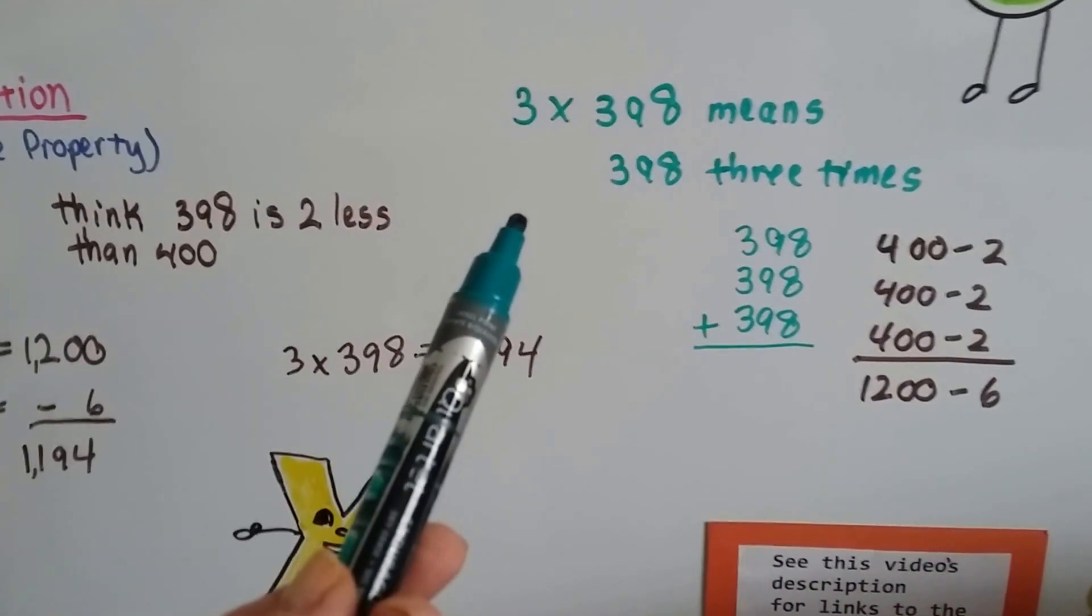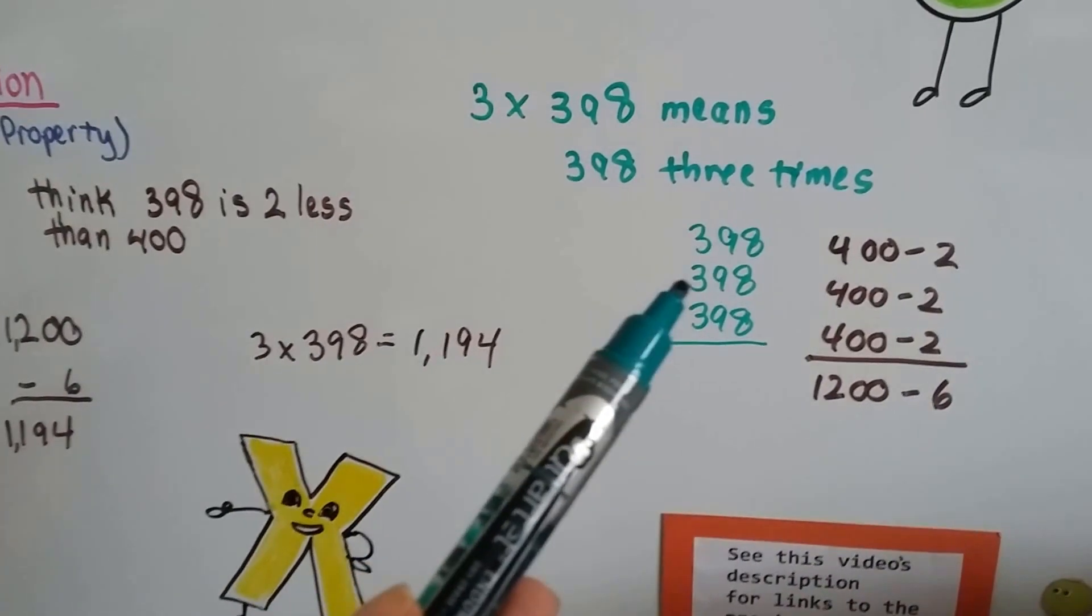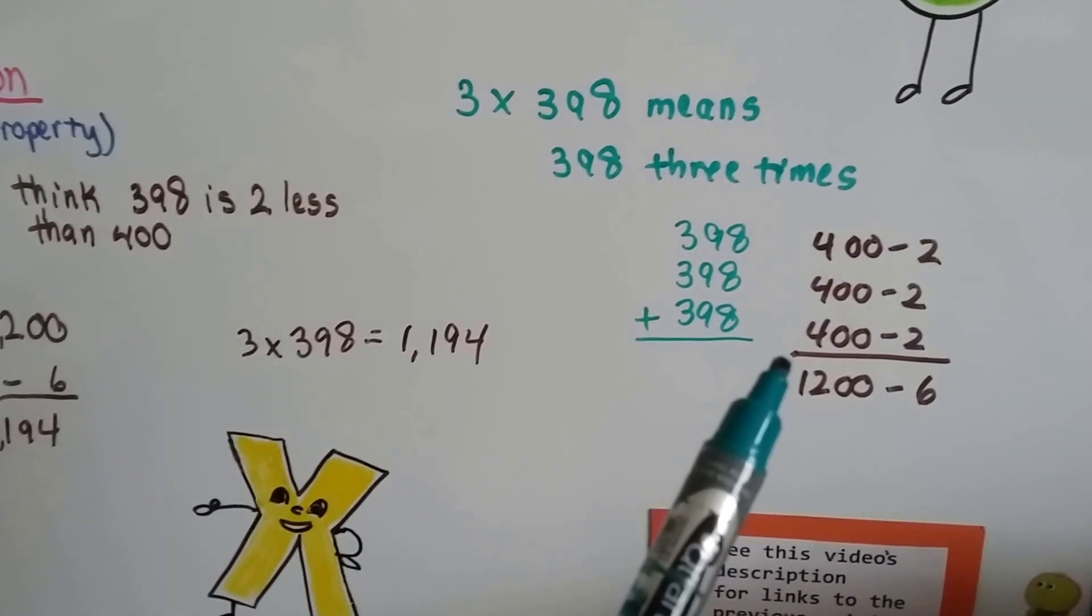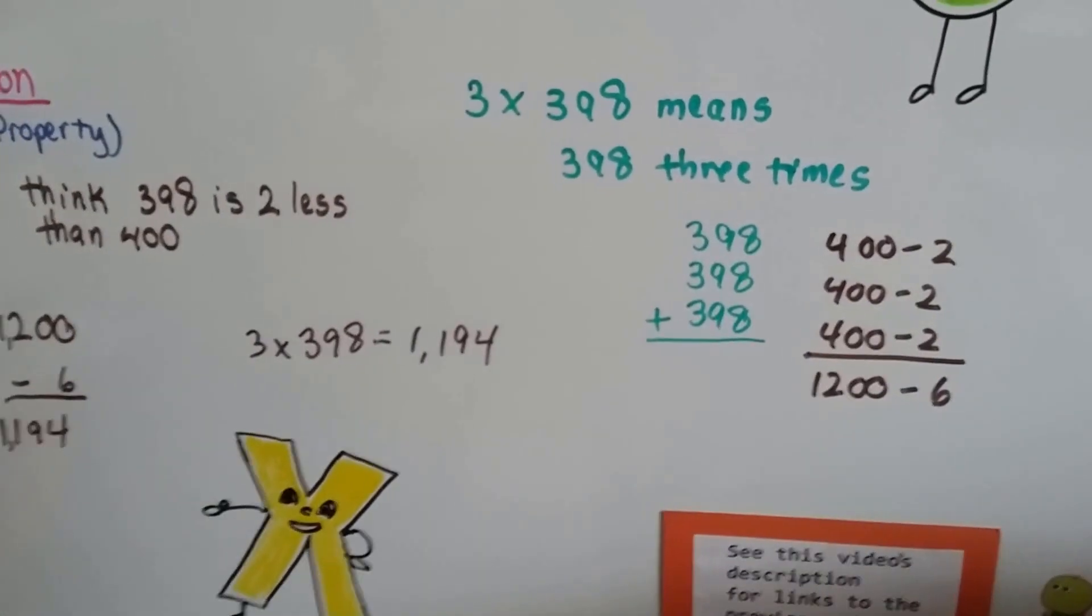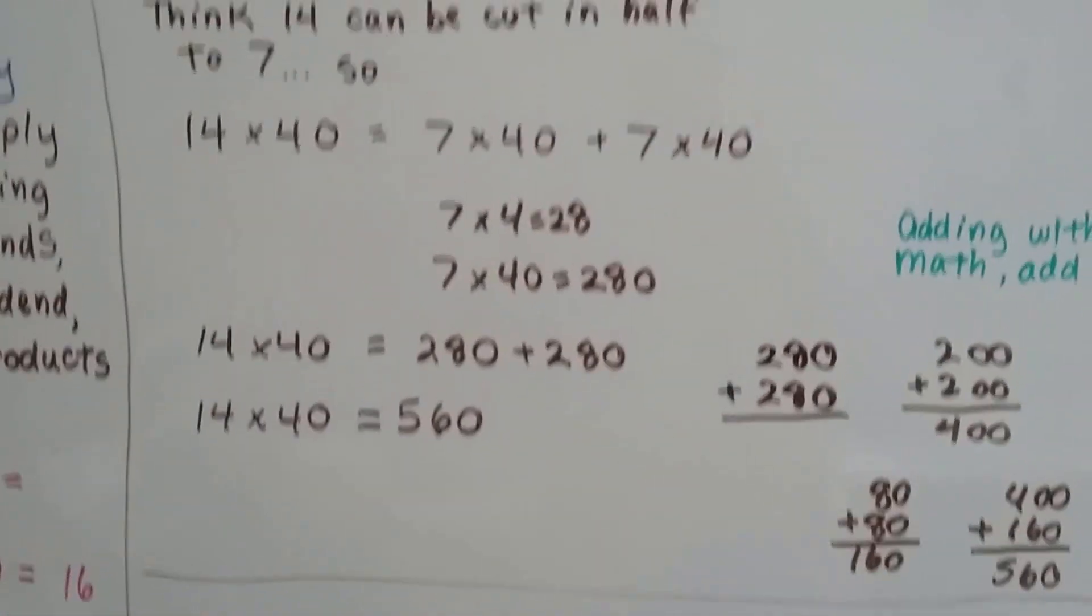So 3 times 398 means 398 three times. That's 398 plus 398 plus 398. That would be 400 minus 2 plus 400 minus 2 plus 400 minus 2. That's 1200 minus 6.